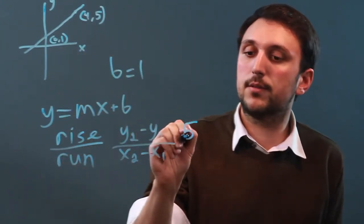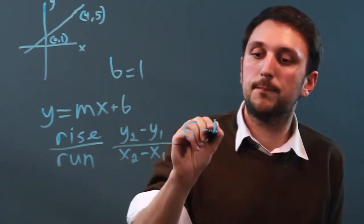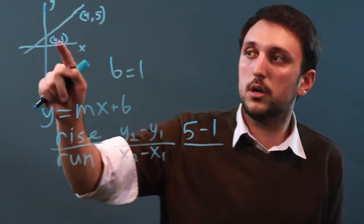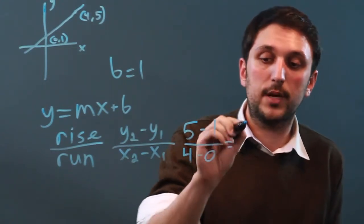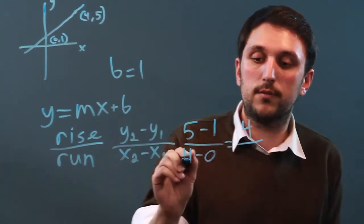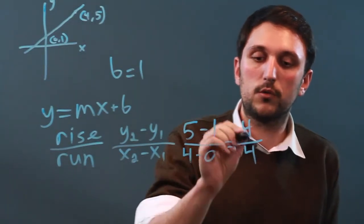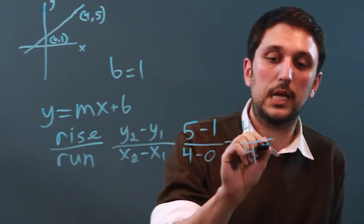So we say 5 minus 1 over 4 minus 0. 5 minus 1 is 4, and 4 minus 0 is 4. So 4 over 4 equals 1.